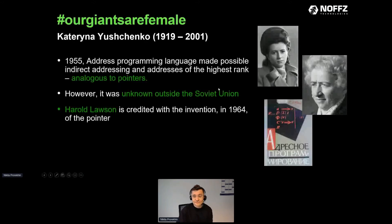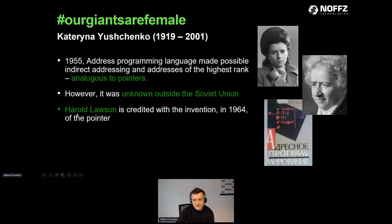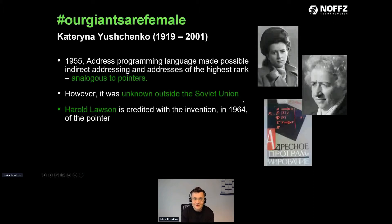She was the founder of the first Soviet school of theoretical programming. She wrote the book in 1955 and explicitly, mathematically explained the idea of pointers that we use in programming languages. However, it was unknown outside of the Soviet Union — Harold Lawson is credited for the invention that happened later. I'm really proud that Katrina Yushinka made this huge theoretical contribution.